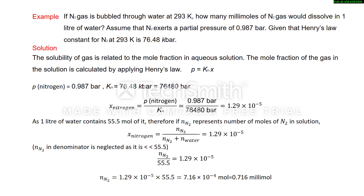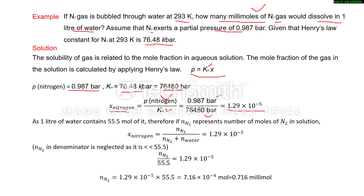One example: if nitrogen gas is bubbled through water at 293 K, how many millimoles of nitrogen gas would dissolve in one liter of water? Assume that nitrogen exerts a partial pressure of 0.987 bar and Henry's law constant for nitrogen is 76.48 kbar. We have to find the millimoles of nitrogen, so first we find the mole fraction of nitrogen using P = Kh × X. P is 0.987 bar, and Kh is 76.48 kbar, converting to bar by multiplying by 10³. Using the formula, mole fraction of nitrogen equals partial pressure divided by Henry's law constant, giving us 1.29 × 10⁻⁵.